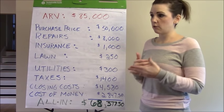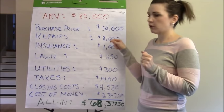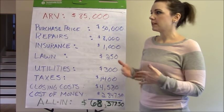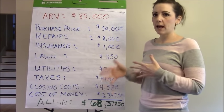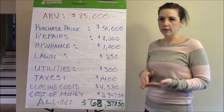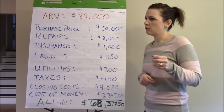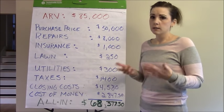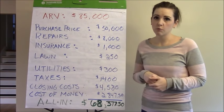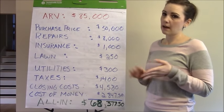Too many people use exact numbers — a realtor or wholesaler tells them the ARV is $90,000, so they run their numbers using $90,000. I don't work like that. I like to leave fluff, because when you do a number of rehabs and rental properties, you know from experience you're always going to stumble upon unexpected things during the rehab process. Something always pops up. So leave fluff starting with the ARV. We knew it was worth more than $85,000, but we used $85,000 to run our numbers. That way we were safe.